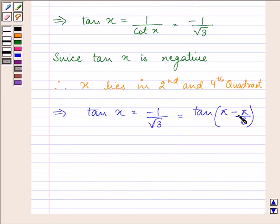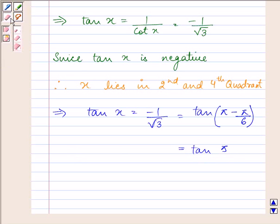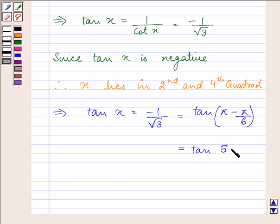So the answer comes out to be tan 5 pi by 6. This is the value in the second quadrant.